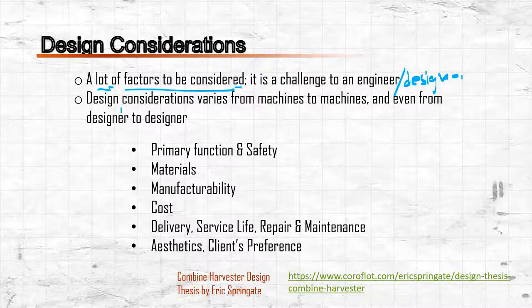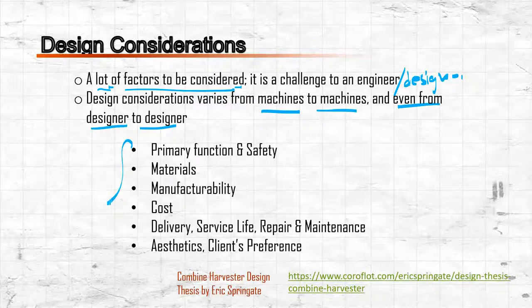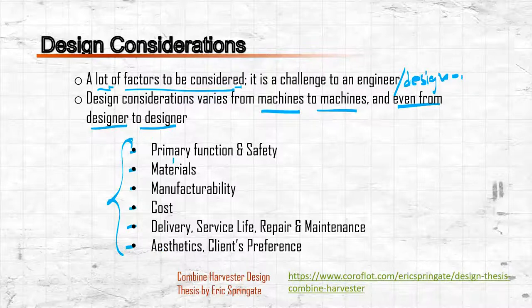Design considerations vary from machine to machine — for example, designing a combined harvester versus designing a processing equipment or a tractor implement. They also vary from designer to designer. Although it is a variable concept, it is good to lay out some common points, keeping in mind that these will vary.